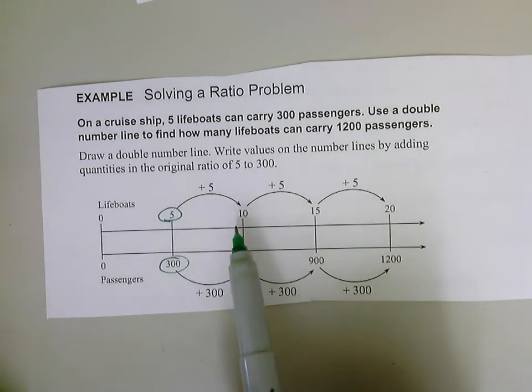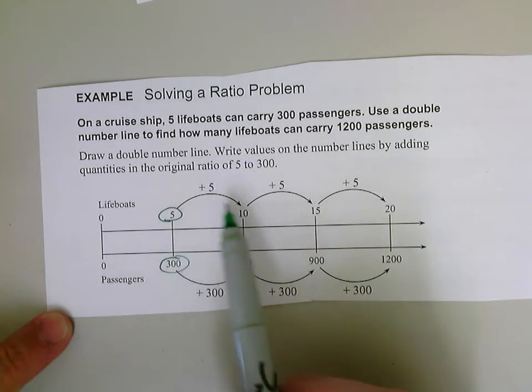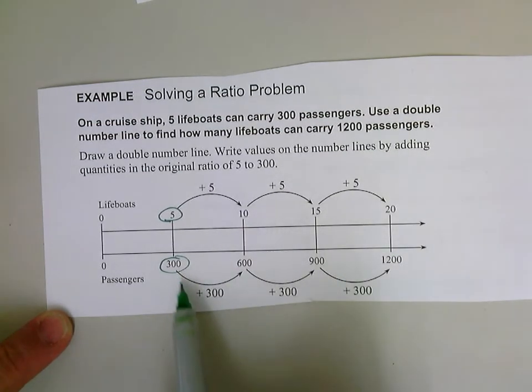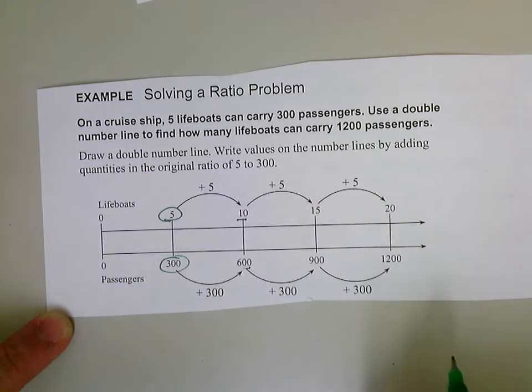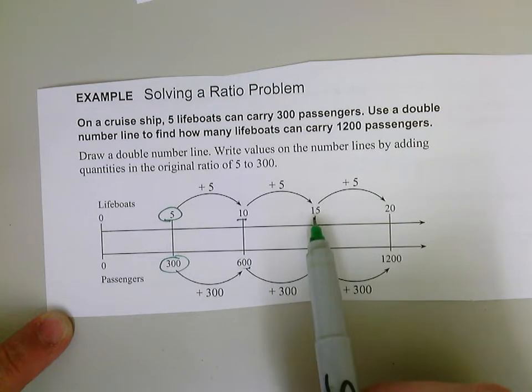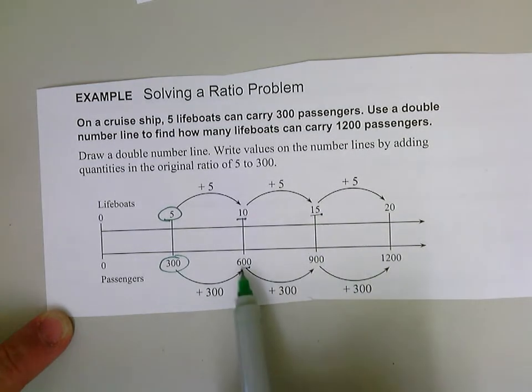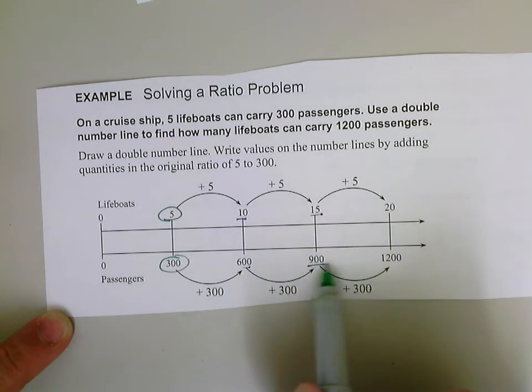So another five, another group of lifeboats would be 10 lifeboats, and another group of 300 passengers would be 600. Well, I'm not to 1,200 yet. So let's do another group of five. Another group of lifeboats gives us 15 lifeboats. Another group of passengers would give us 900 passengers.